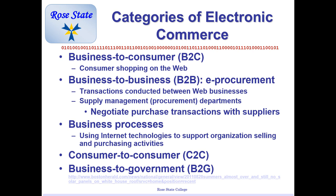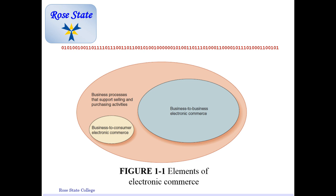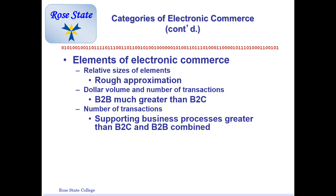What is C2C, or consumer to consumer? Consumer to consumer is more like direct sales where someone who has consumed a product resells it to someone else — like a used car dealer. Then you have business to government, B2G, where businesses sell to the government for profit. So the different types of e-commerce include B2B, B2C, C2C, and B2G, all encompassing the overall business process of e-commerce. The elements include relative sizes — C2C, B2C — and dollar volume, where B2B is much greater than B2C.